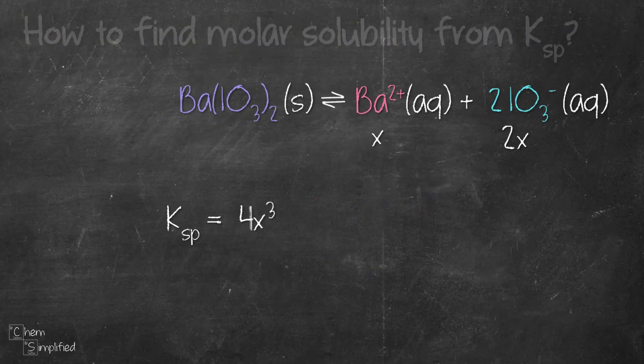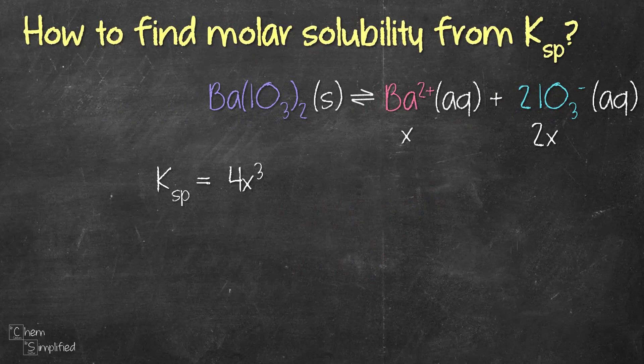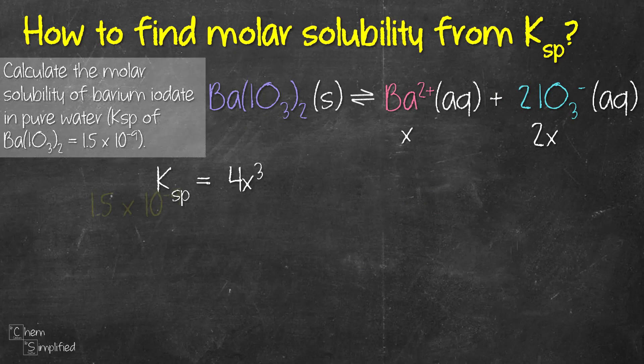So if we were to find the molar solubility from given Ksp, let's say this is a question that we're given. The Ksp is 1.5 times 10 to the power of negative 9. We can solve that by equating that with 4x cubed which is what we have found for our Ksp expression and we can solve for x.